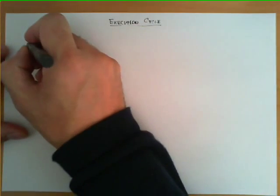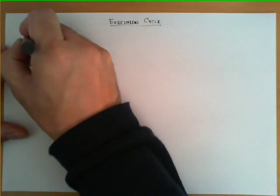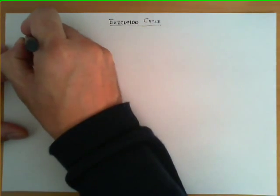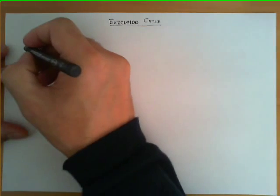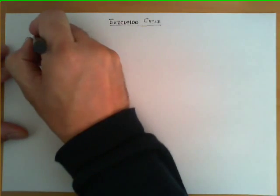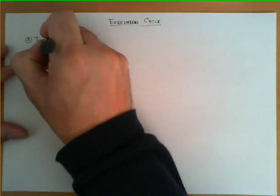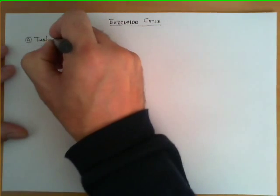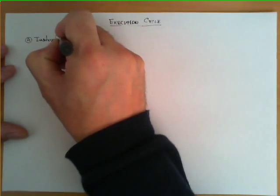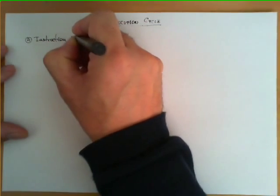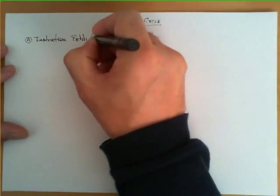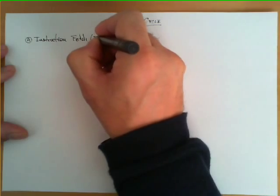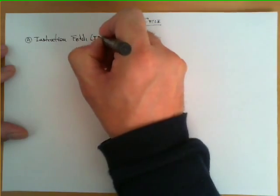The execution cycle is divided into two big blocks. The first one is known as the instruction fetch, which we'll abbreviate as IF.